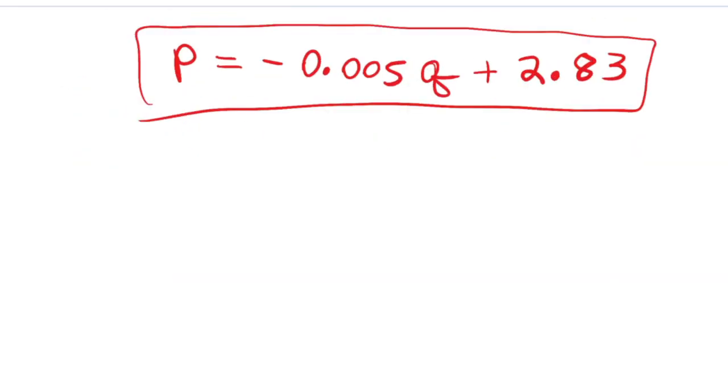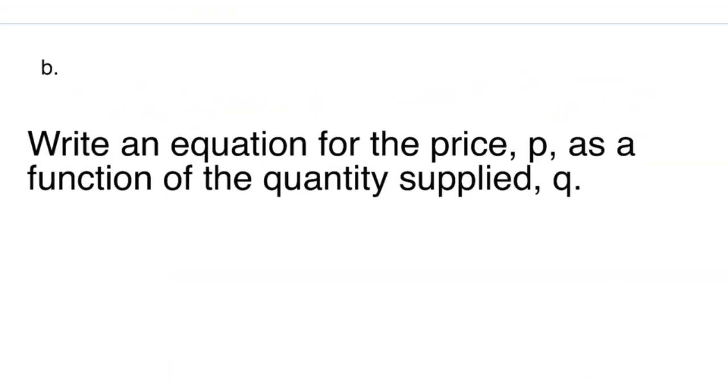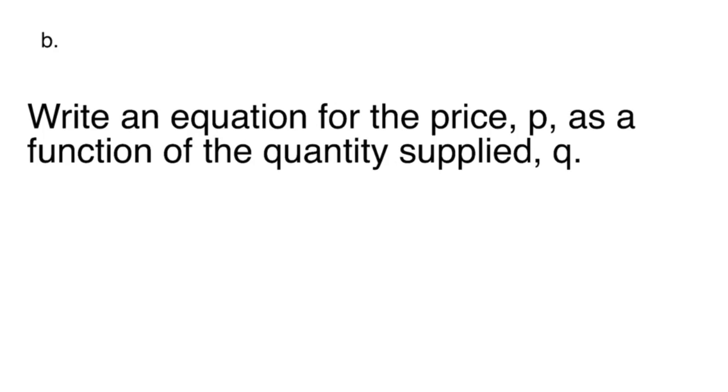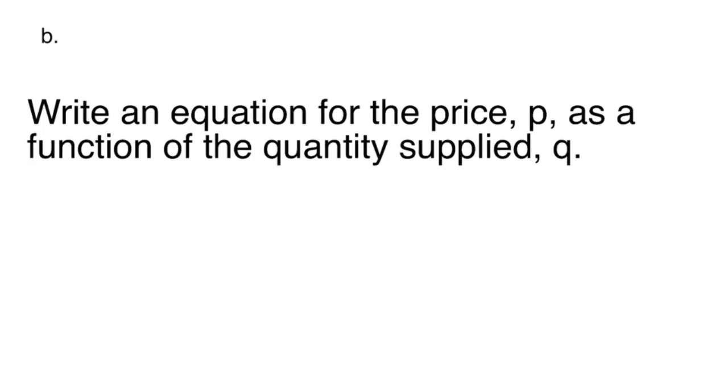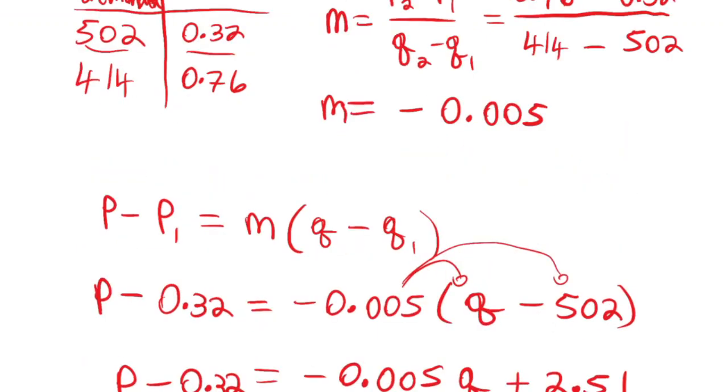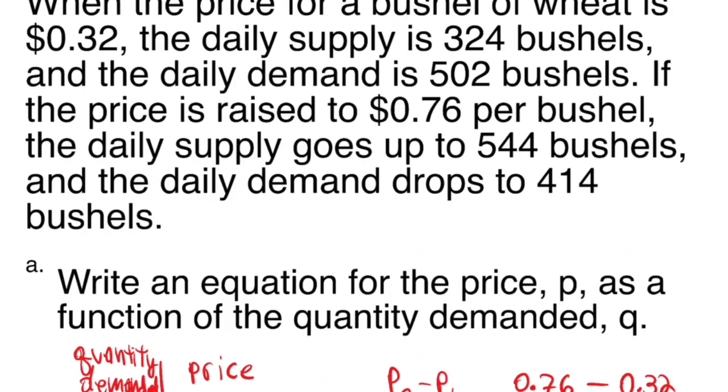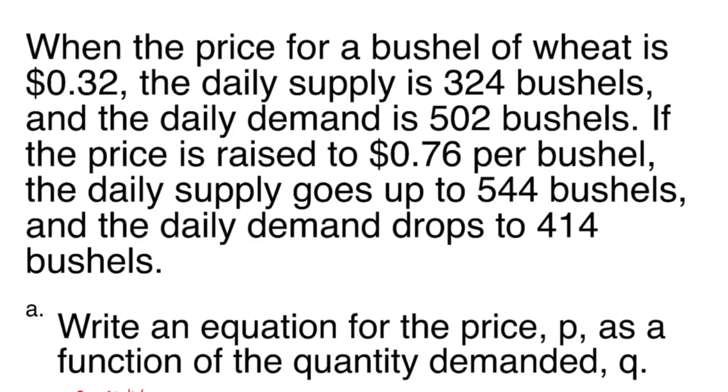Now we're going to do the same thing for the price with respect to the quantity supplied. We're going to create two ordered pairs with the quantity supplied as the X values, or the initial components, and the price for that quantity as the second component.